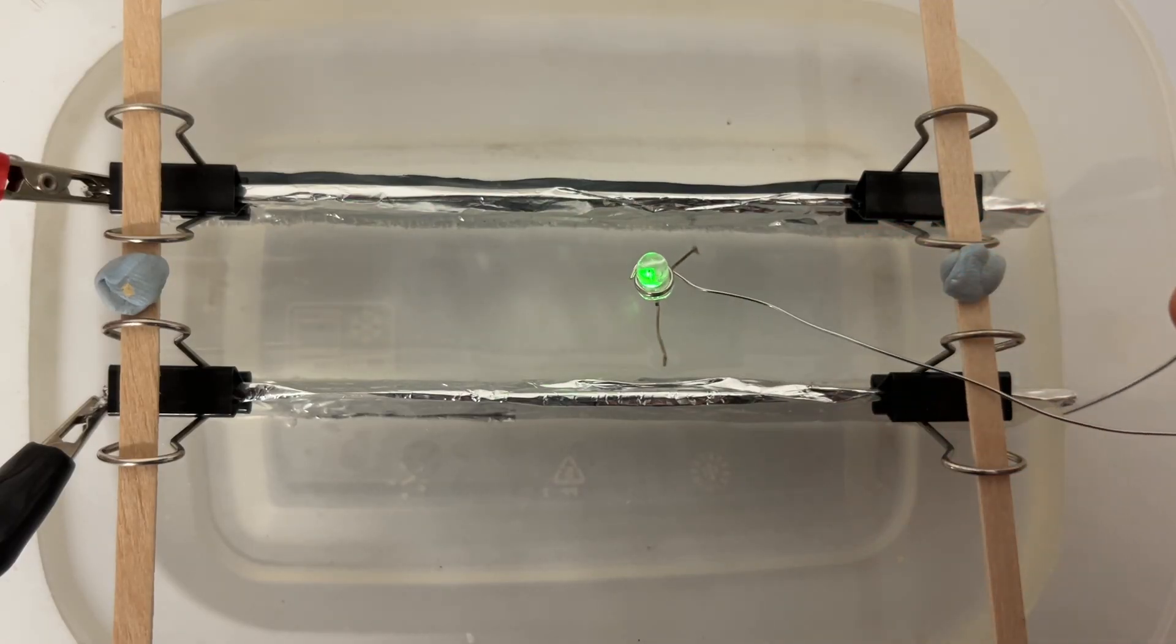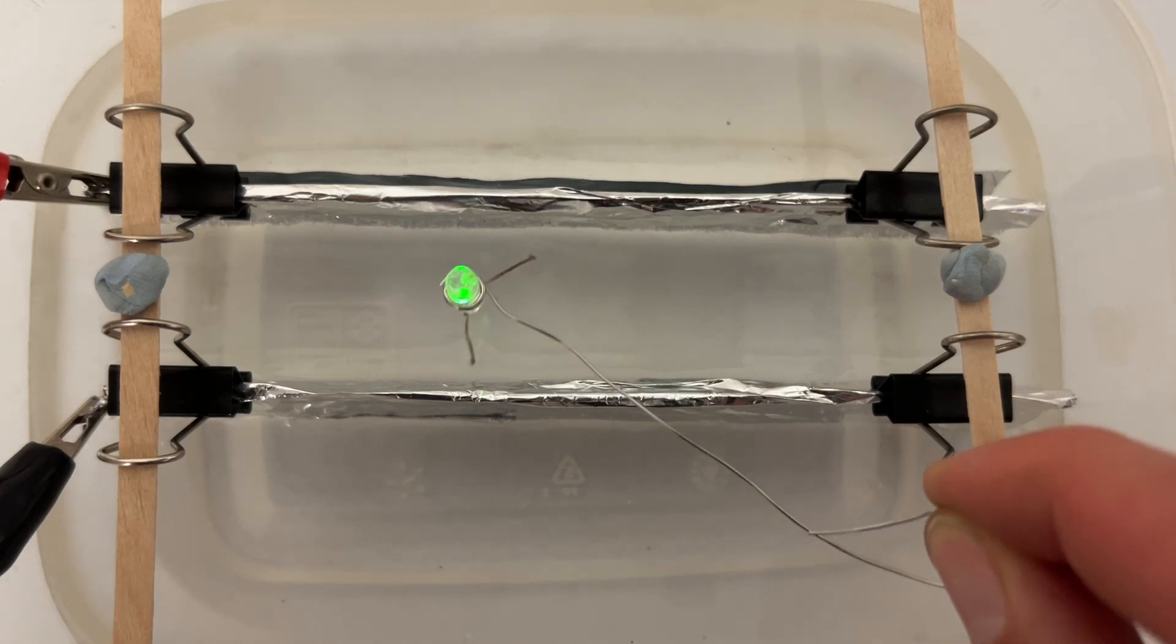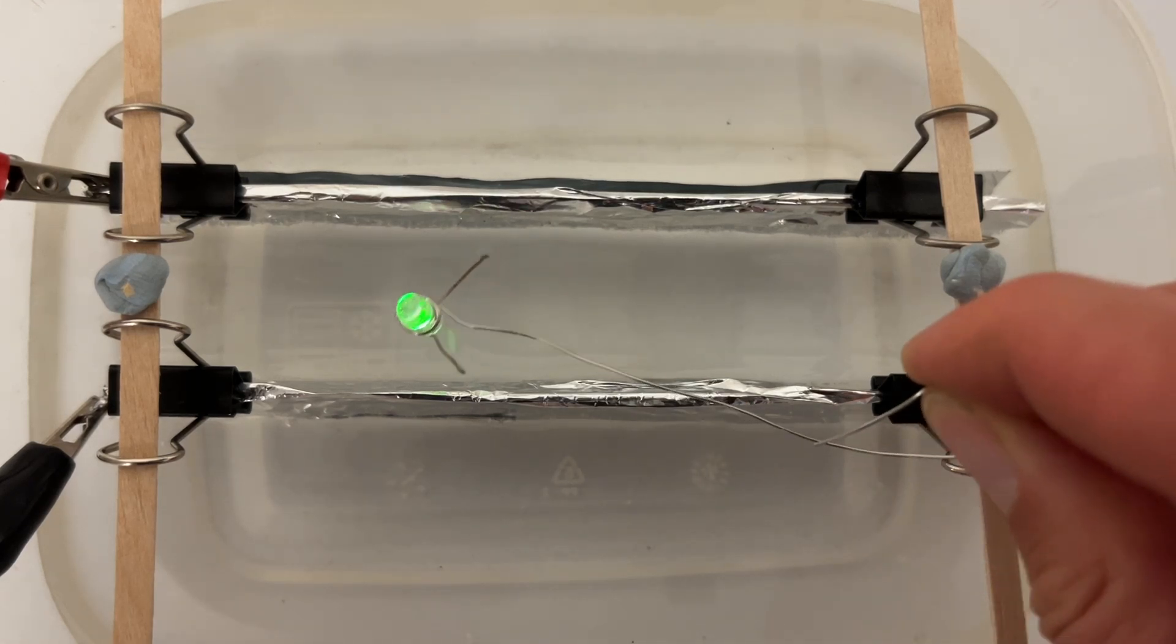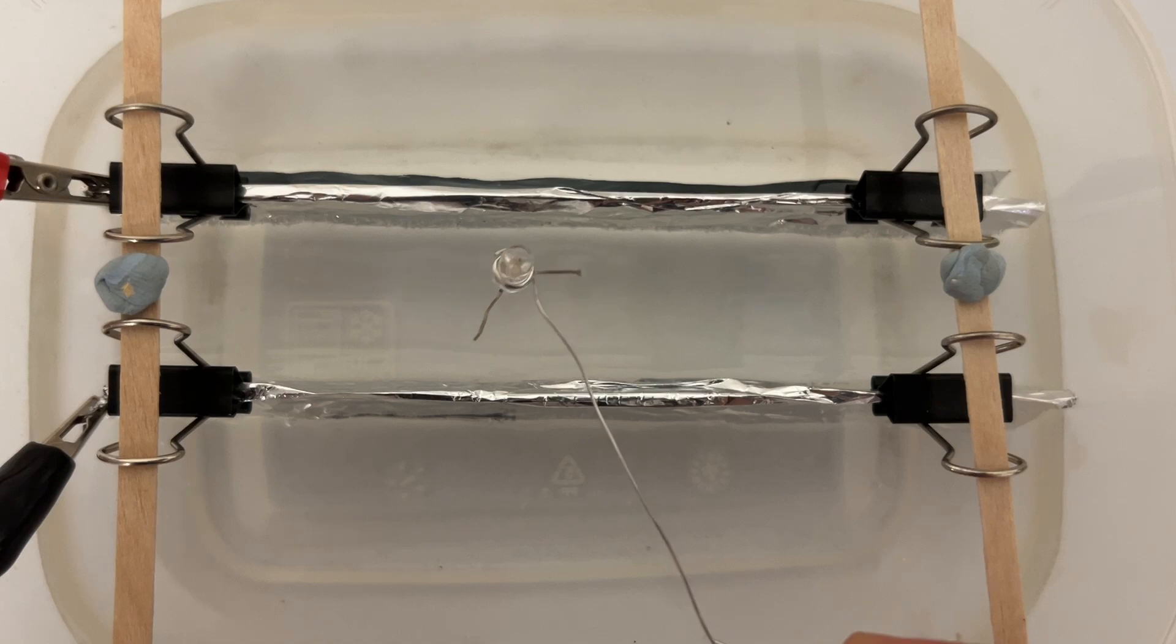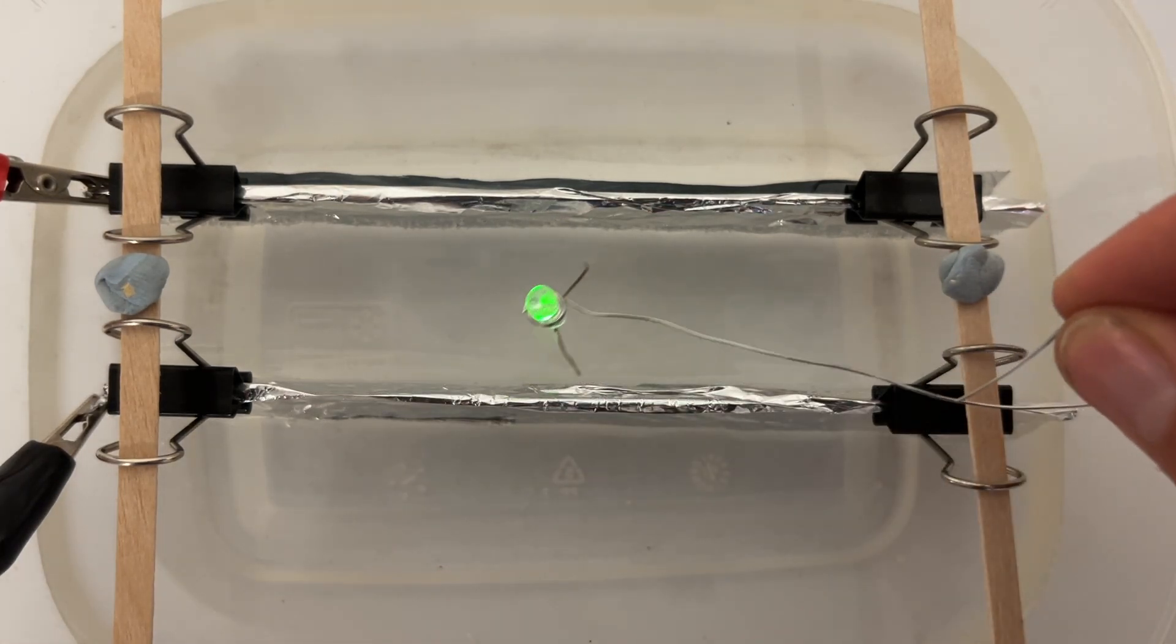With aluminum foil electrodes dipped in tap water, you can explore the uniform electric field created by using an LED. The two electrodes are connected to a 9 volt low voltage power supply, but you can also use a PP3 battery.